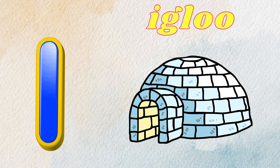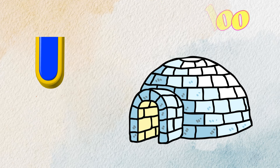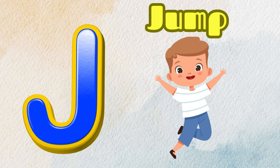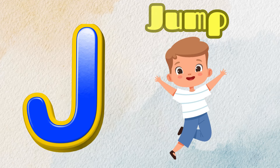I is for Igloo, I-I-Igloo. J is for Jump, J-J-Jump.